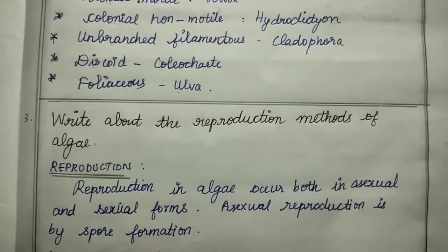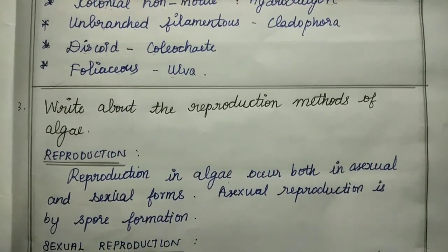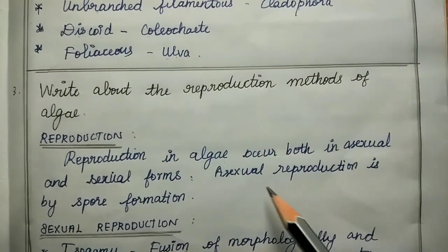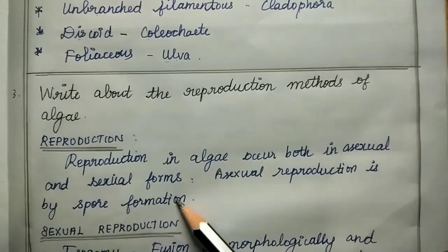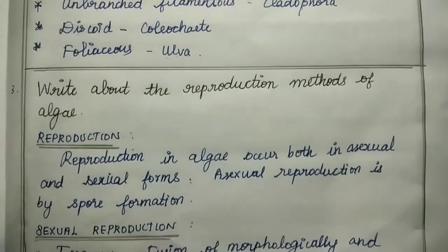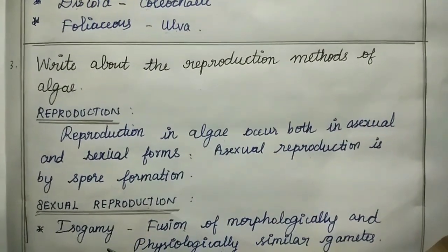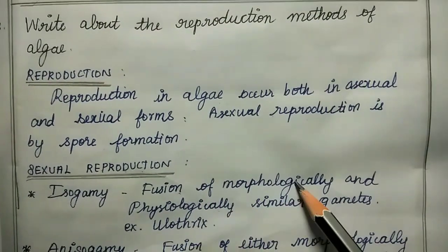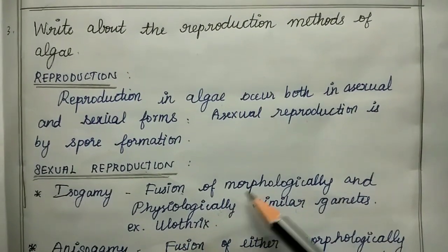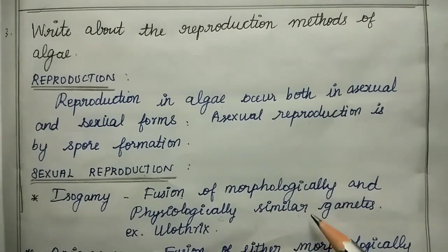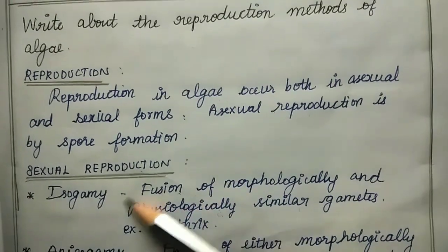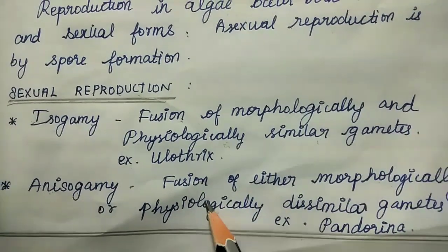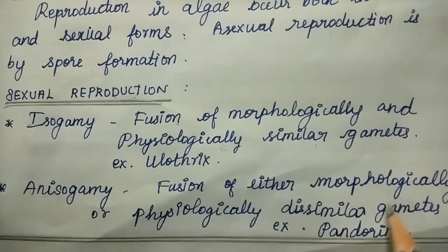Third question: write about the reproduction methods of algae. Reproduction in algae is both asexual and sexual form. Asexual reproduction is by spore formation. Sexual reproduction includes isogamy, anisogamy, and oogamy. Isogamy means the fusion of morphologically and physiologically similar gametes.